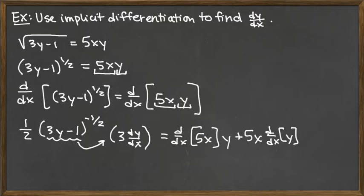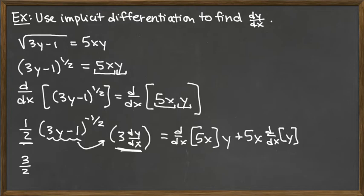I'm going to clean up the left hand side in our next step. We have the number 1/2 times the factor raised to the negative 1/2, and then times a number times dy/dx. I'm going to combine these two simple terms by doing the multiplication, giving me 3/2. So we have 3/2 times the 3y minus 1 to the negative 1/2, and then dy/dx tacked on to the end. That cleans up the left hand side.